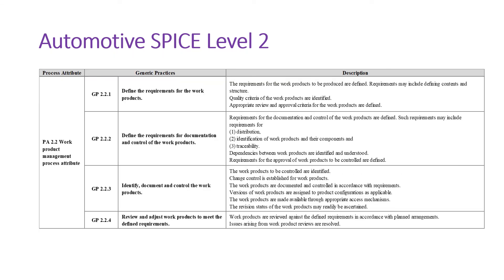GP 2.1.7 is talking about managing the interfaces between involved parties. For PA 2.2: GP 2.2.1 is talking about defining the requirements of the work products. GP 2.2.2 is talking about defining the requirements for documentation and control of the work products. GP 2.2.3 is talking about identifying, documenting, and controlling the work products. GP 2.2.4 is talking about reviewing and adjusting work products to meet the defined requirements.